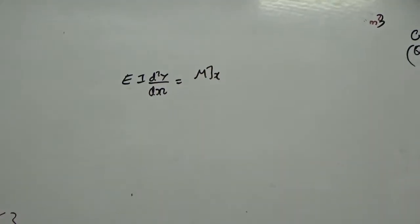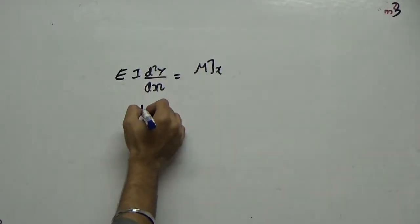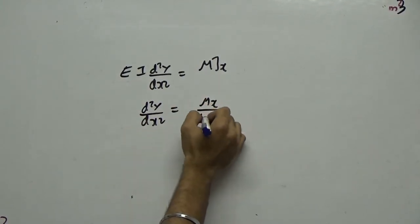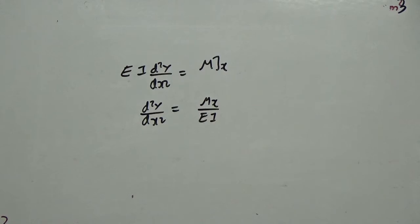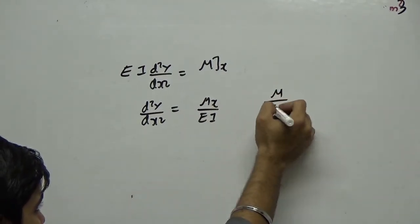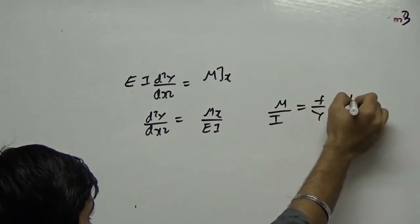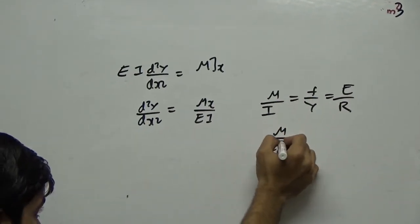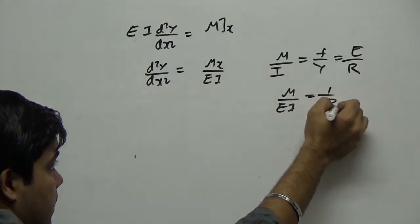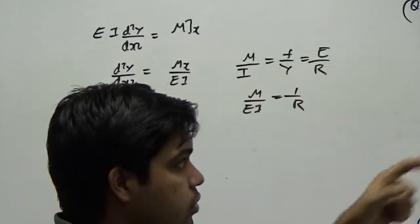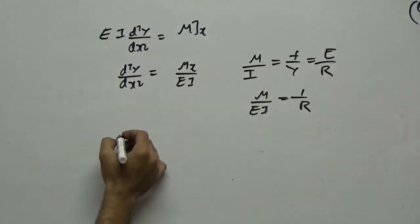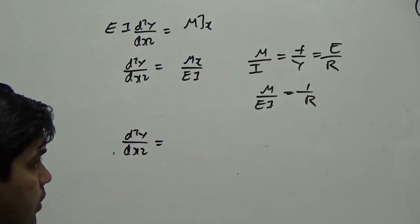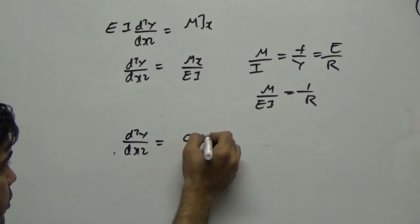Using the basics of strength of materials: EI d²y/dx² equals M(x). From this, d²y/dx² equals M/EI. Also from pure bending, M/I equals f/y equals E/R, so M/EI equals 1/R. Since 1/R is given as 0.004, we can write d²y/dx² equals 0.004.